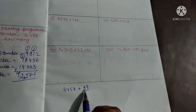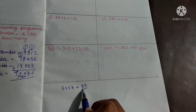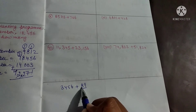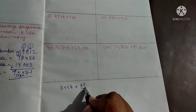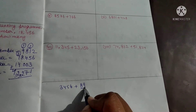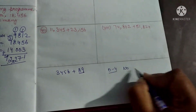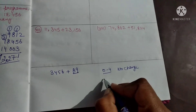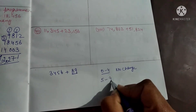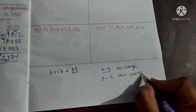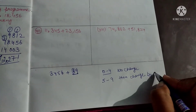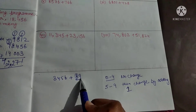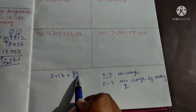Now let's round off first. We will see which place — ones, tens — and we will round off accordingly. The rule is: if the digit being observed is between 0 to 4, then no change in this value. If it is between 5 to 9, then add 1. Now in this example, we observe this place value: it is 9, which is between 5 to 9, so we add 1.